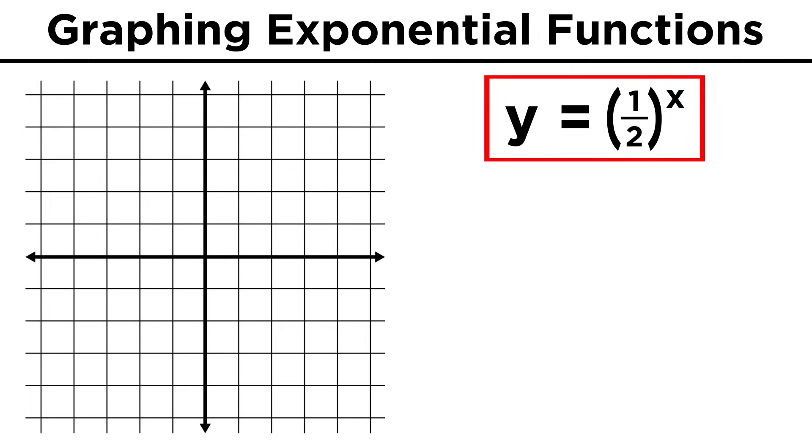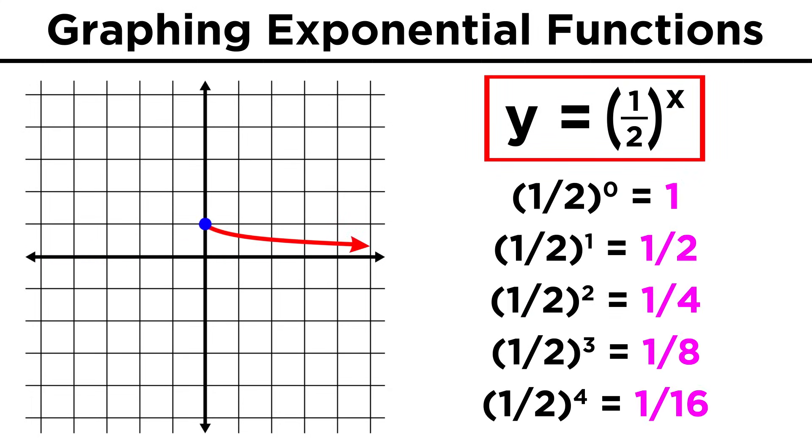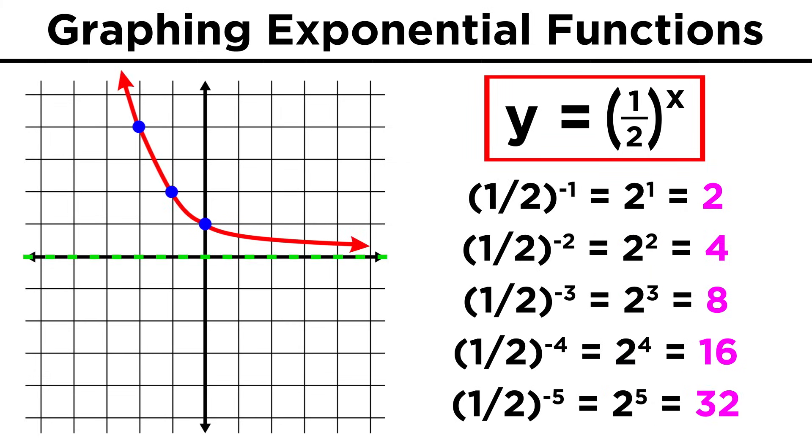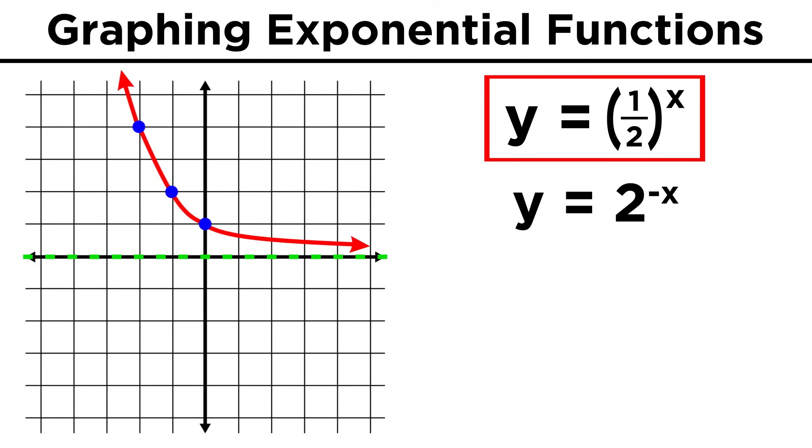Now let's look at one half to the x. Now as the exponent increases, the function approaches zero, so there is again a horizontal asymptote in the x-axis. As the exponent becomes increasingly negative, the function approaches positive infinity. This is actually the same as two to the negative x, because to get rid of the negative sign on the exponent, we invert the base, which would give us one half to the x.